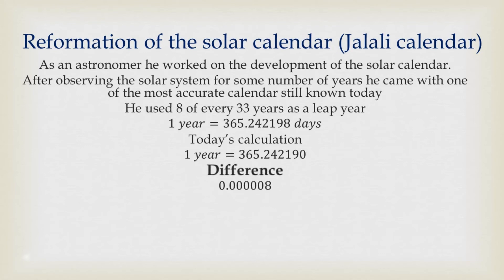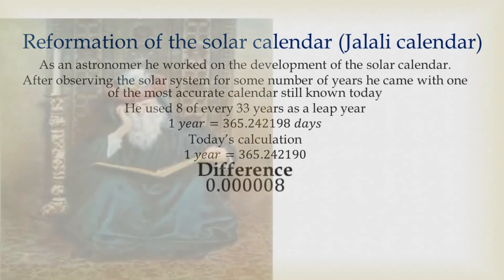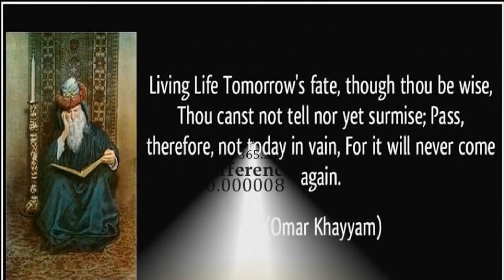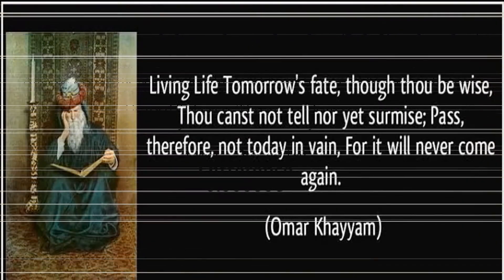The difference between the Omar Khayyam calculation and the modern day calculation is 0.0000008, which is very, very insignificant and that made him so relevant to date. His solar counting system is still used in the Asian part of the continent to date.